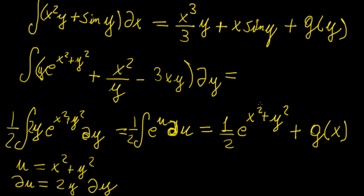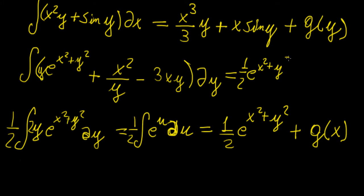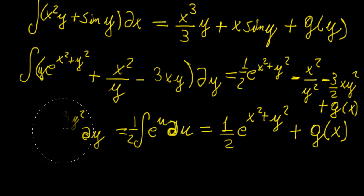Differentiating back with respect to y confirms the first term works correctly, and g(x) goes to zero. For the remaining terms: x²/y integrates with respect to y as x²·ln(y) — note the speaker writes this as x²y² over a power step — and −3xy integrates to −(3/2)x·y². So the final answer is ½·e^(x²+y²) − x²·y² + ... − (3/2)x·y² + g(x).